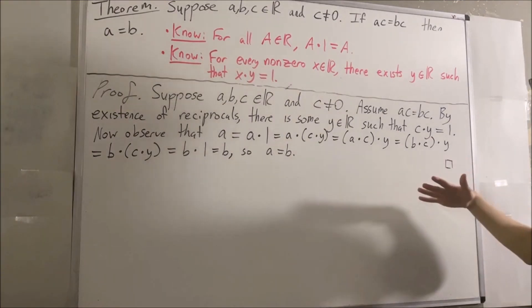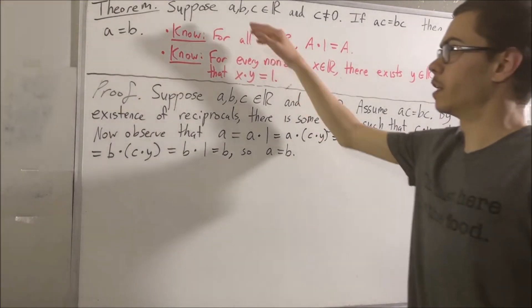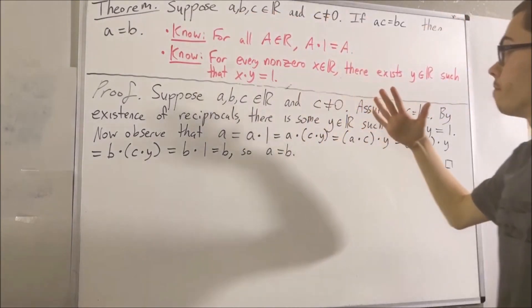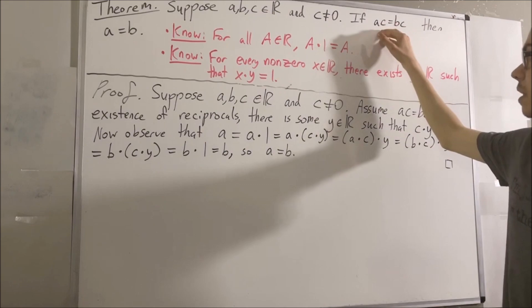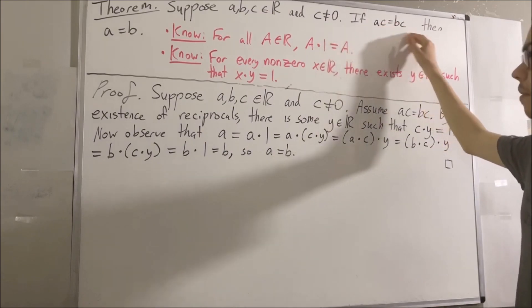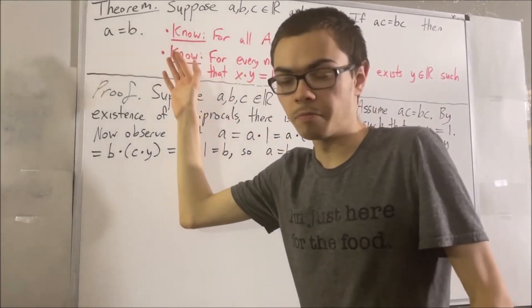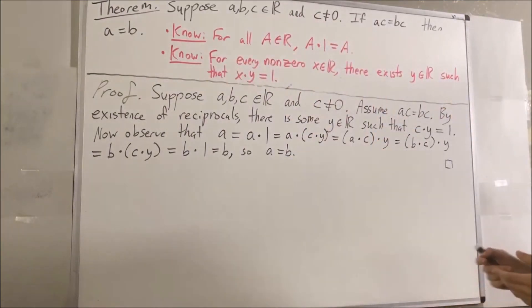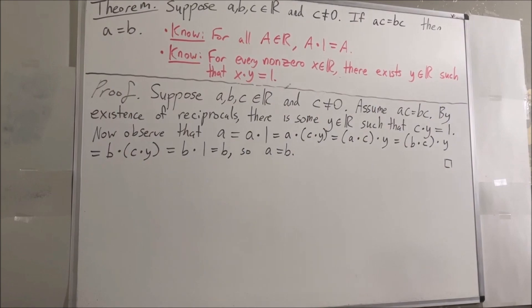A similar argument could be used to show if A, B, and C are real numbers and A is not equal to 0, then, if AB is equal to AC, then B is equal to C. Same sort of idea, just a different one. That's pretty much it for this video. Thank you.